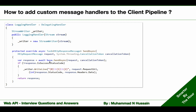We need to call the base.SendAsync method and wait for the response. After getting the response, I am simply checking the status code. Based on the status code, if the status code indicates failure, I am doing the logging; in case of success I am skipping that part and returning the response. By following these three simple steps we can create a custom message handler.